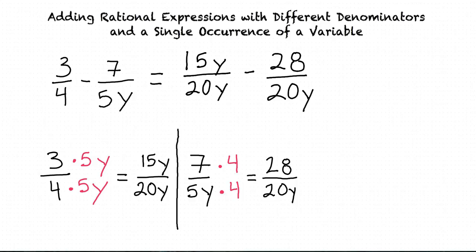Now that we have the same denominator in both fractions, we can subtract the numerators and keep the same denominator to get our final answer. This gives us 15y minus 28 over 20y. Since this cannot be simplified any further, it's our final answer.